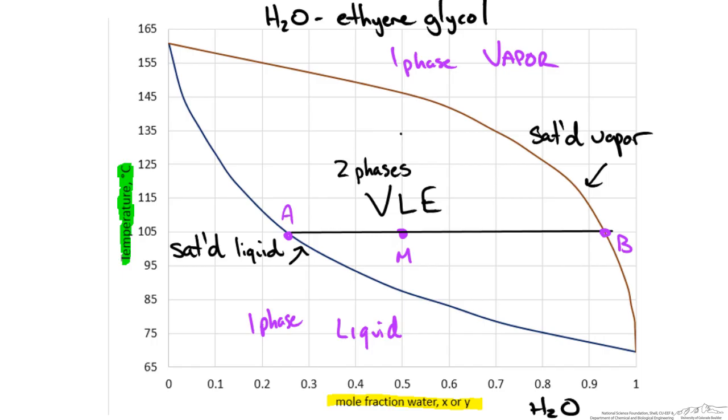So this means that the amount of liquid compared to the amount of our mixture is just the distance MB over our total distance AB. This will give us a fraction that is now liquid.